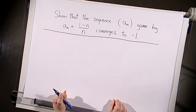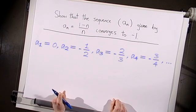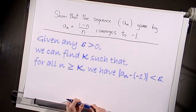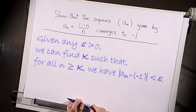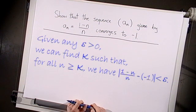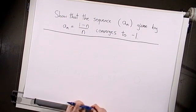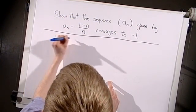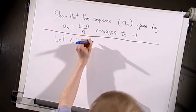In this example, we're asked to show that the sequence aₙ given by aₙ equals (1 minus n) divided by n converges to minus 1. So here, a₁ is equal to 0, a₂ is minus one half, a₃ is minus two thirds, and so on. We need to show that for any positive epsilon, we can find a number k such that from the kth term onwards, the distance between aₙ and minus 1 is less than epsilon — that is, when the distance between (1 minus n)/n and minus 1 is less than epsilon.